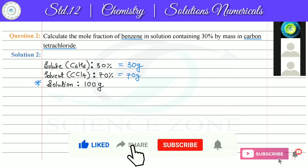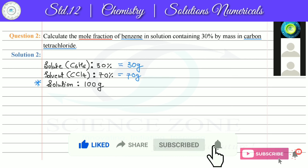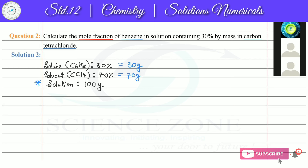The question asks for the mole fraction. The mole fraction of benzene equals moles of benzene divided by (moles of benzene plus moles of carbon tetrachloride). To use this formula we first need to calculate the moles of each component.